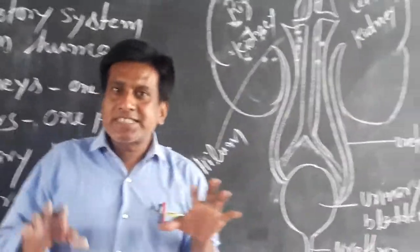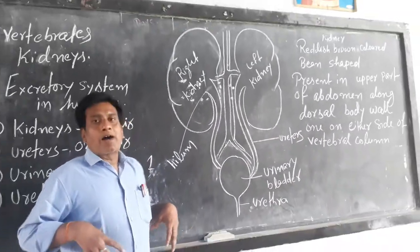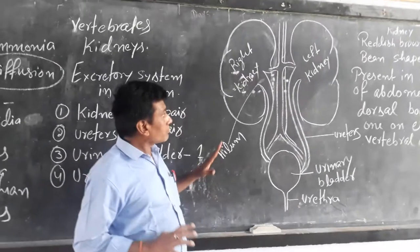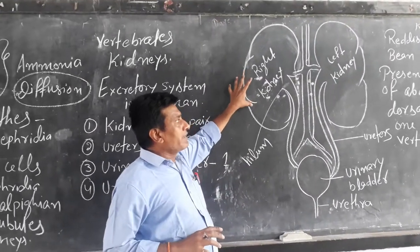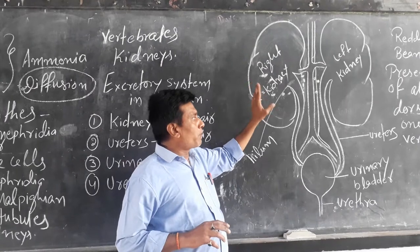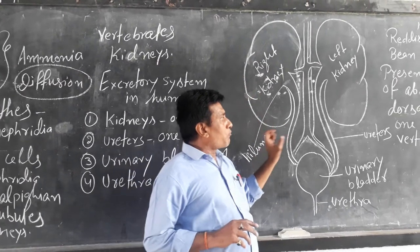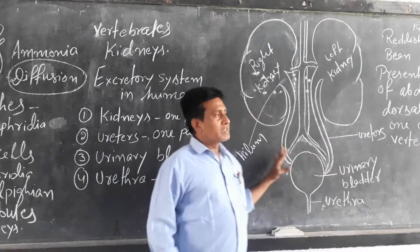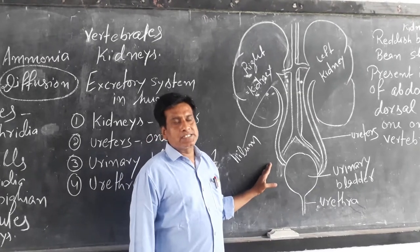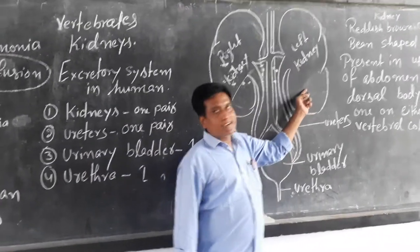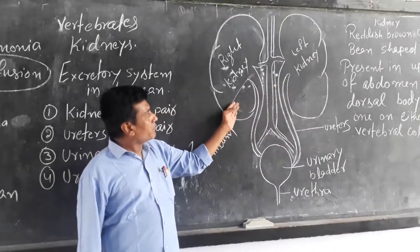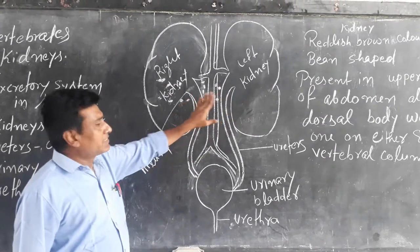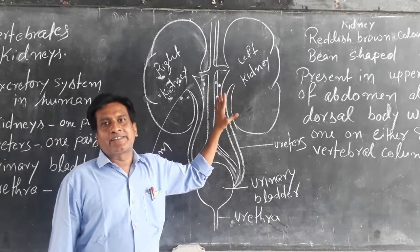Our excretory system is situated in our abdominal cavity. The kidney is present in the upper part of the abdomen along the dorsal body wall. This is the structure of the human excretory system. These are the kidneys — this is the left kidney and this is the right kidney. These two kidneys are attached to a renal artery and renal vein.